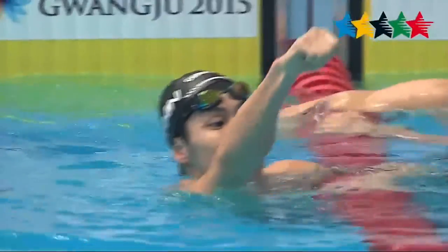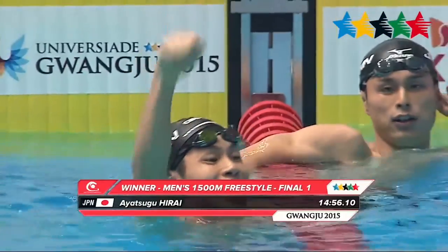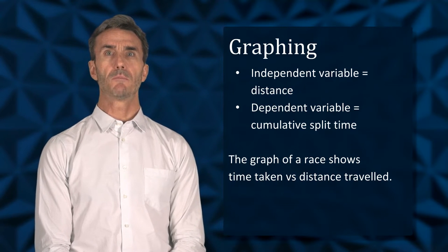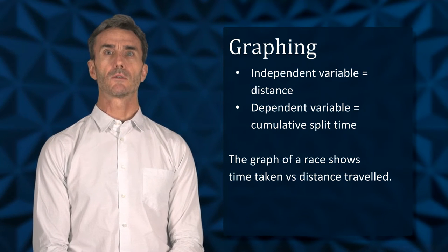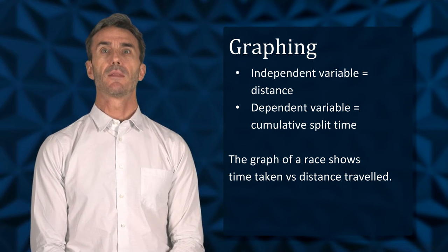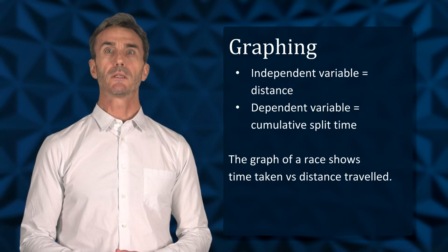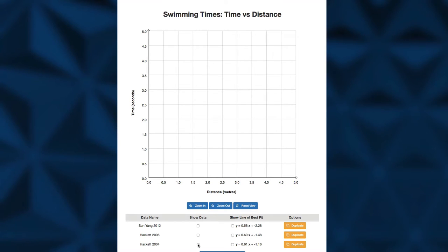From a swimmer's point of view, they are interested in a graph showing time per lap. When this graph is drawn, the independent variable on the horizontal axis is the distance or lap number, and the dependent variable on the vertical axis is the cumulative split time. The graph shows time taken versus distance travelled. Typically speed graphs can be represented with distance versus time, but it really depends on what you want to measure — time is not always the independent variable on the horizontal axis.